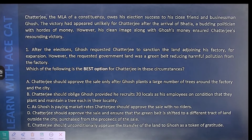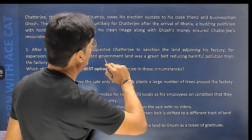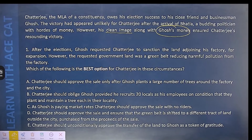Coming on, students, one more set with three questions. Chatterji, the MLA of a constituency, owes his election success to his close friend and businessman Ghosh. The victory had appeared unlikely for Chatterji after the arrival of Bhatia, a budding politician with hoards of money. However, Chatterji's clean image along with Ghosh's money ensured Chatterji's resounding victory. After the elections, Ghosh requested Chatterji to sanction the land adjoining his factory for expansion. However, the requested government land was a green belt, reducing harmful pollution from the factory.